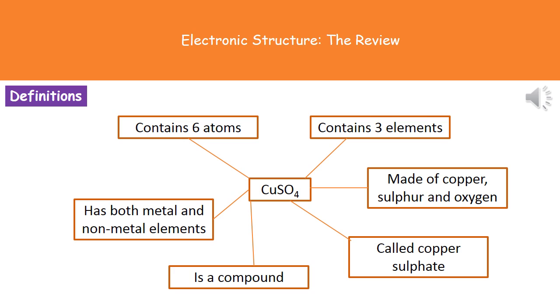If we count the number of atoms, which is a common question, there are four oxygens as shown by the little four, one sulfur, and one copper, giving us a total of six atoms altogether. Copper is a metal, while sulfur and oxygen are nonmetals. They're all joined together through a chemical bond, which tells us it's a compound called copper sulfate. All of that information we can ascertain just by looking at that one formula.